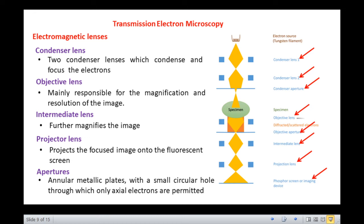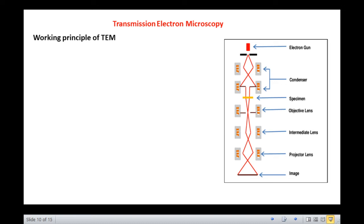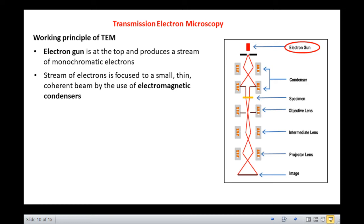Having studied all the parts and their functions, let us now move on to the working principle of a transmission electron microscope. The electron source or gun is at the top and produces a stream of monochromatic electrons. This stream of electrons is focused to a small, thin, coherent beam by the use of electromagnetic condensers. The beam strikes the specimen and parts of it are transmitted, hence the name transmission electron microscopy.